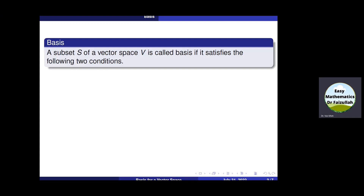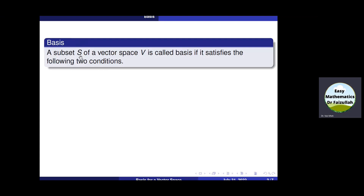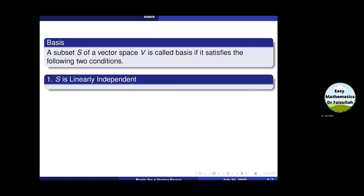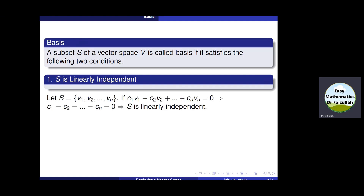Basis for a vector space. We say that a subset S of a vector space V is called a basis for V if it satisfies two properties. The first property is that the elements of S must be linearly independent. Let us see what we mean by linearly independent.